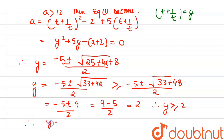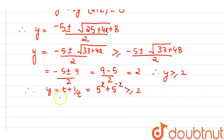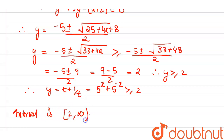Therefore y equals t + 1/t equals 5^x + 5^(−x) is greater than or equal to 2. This means a lies in the interval [2, ∞), because a is greater than or equal to 2 and tends up to infinity. So the interval is [2, ∞).